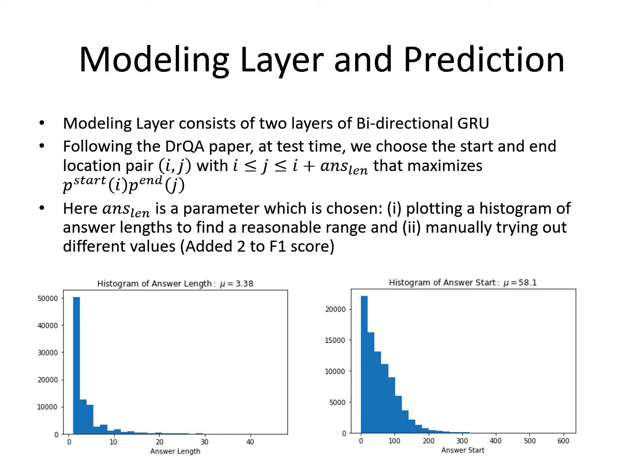One of the constraints is the length of the answer span which is predicted, and by carefully choosing this parameter, I was able to add two percentage points to the F1 score.